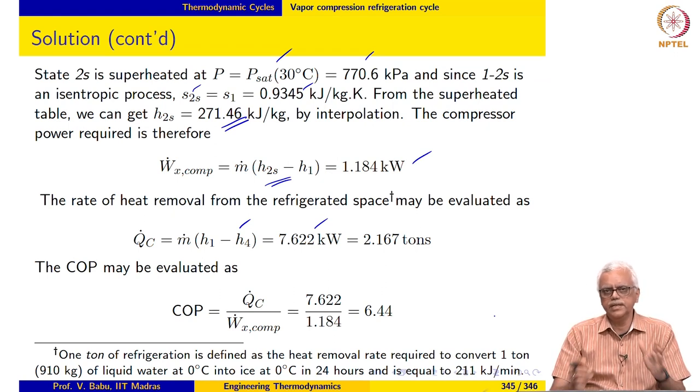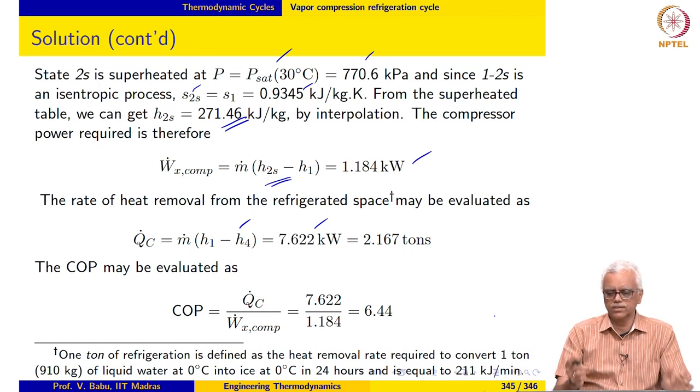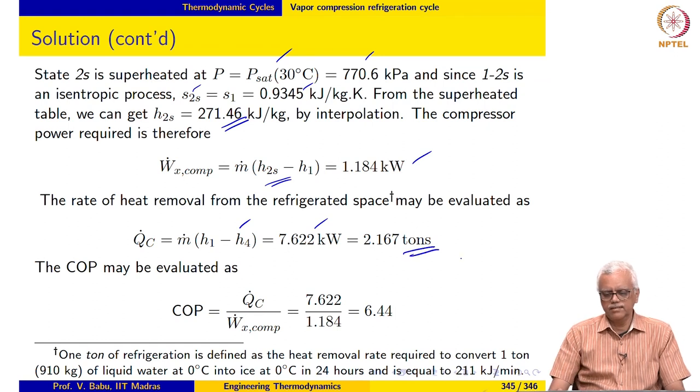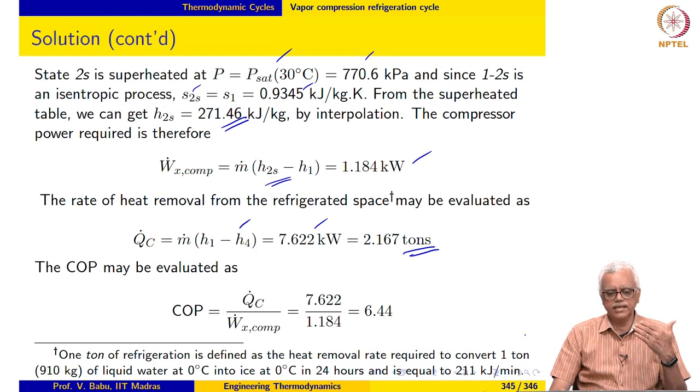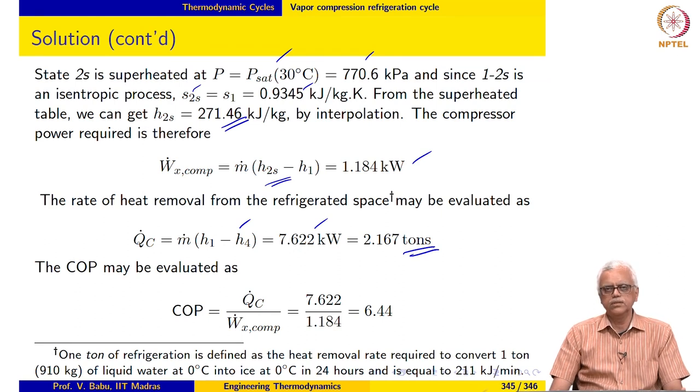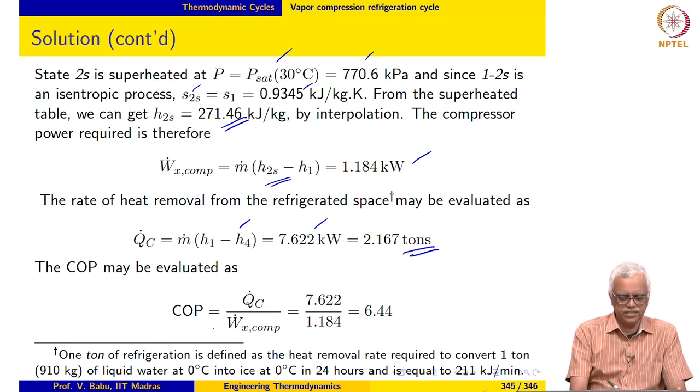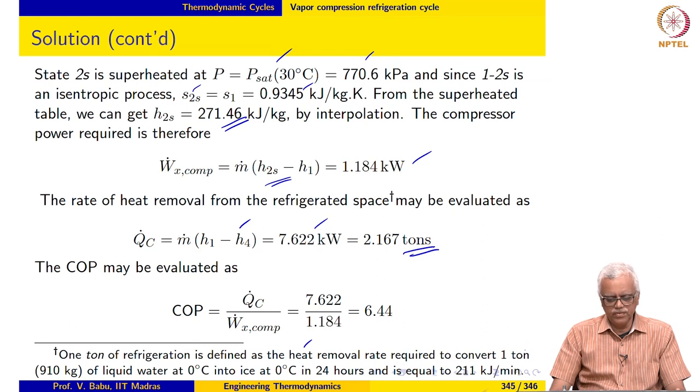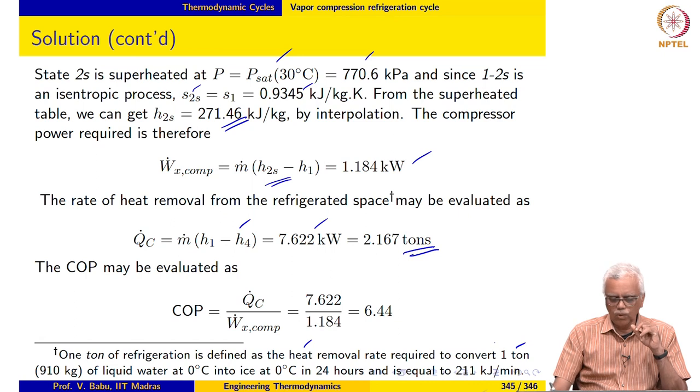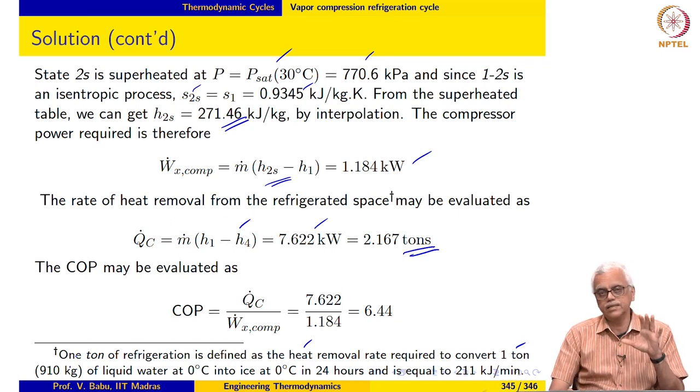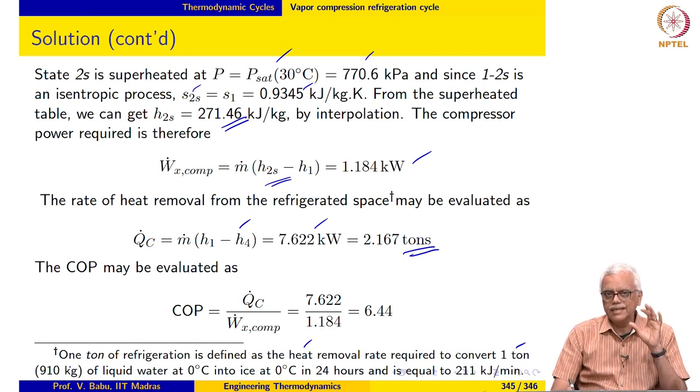In the refrigeration community, it is customary to express heat removed from the refrigerated space in units of tons rather than kilowatts. Generally, we say air conditioner is 1 ton or 1.5 ton and so on. But the definition of a ton of refrigeration is given here. 1 ton of refrigeration is defined as the heat removal rate that is required to convert 1 ton of water.